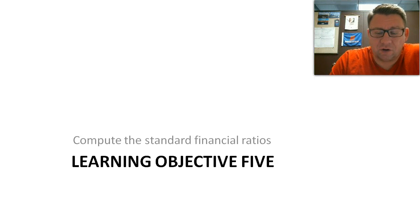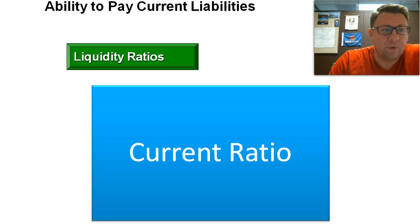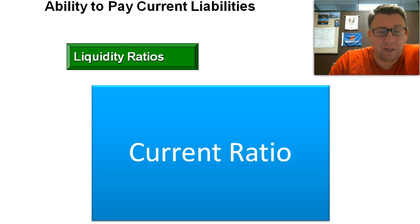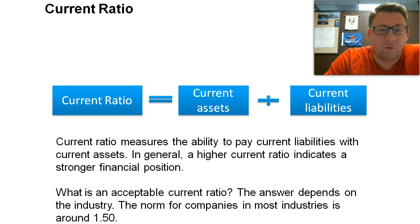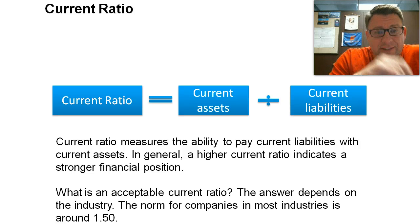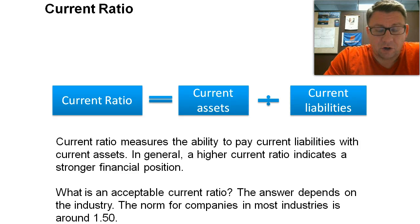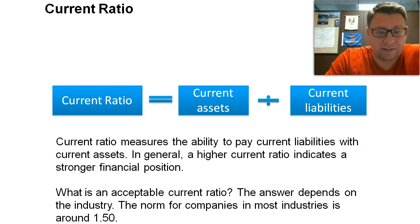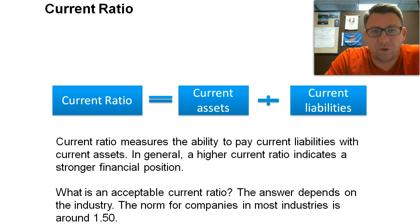This podcast deals with the current ratio. The current ratio is a liquidity ratio — it measures our ability to pay current liabilities. The formula for the current ratio is current assets divided by current liabilities. The current ratio measures the ability to pay current liabilities from current assets. In general, the higher current ratio indicates a stronger financial position.